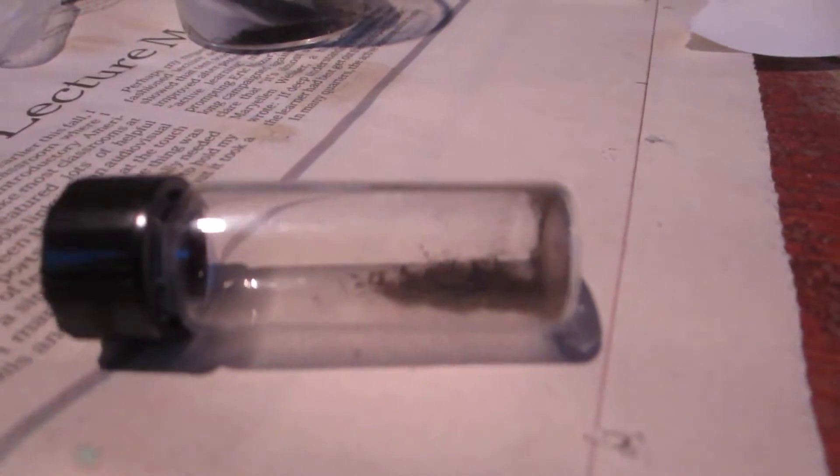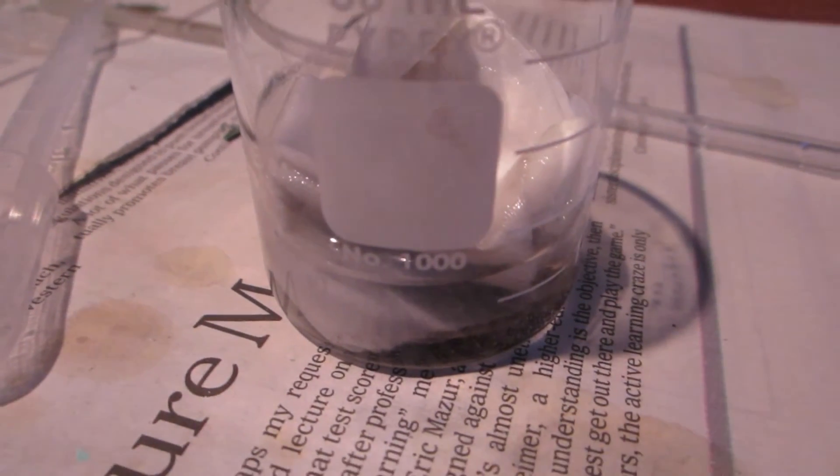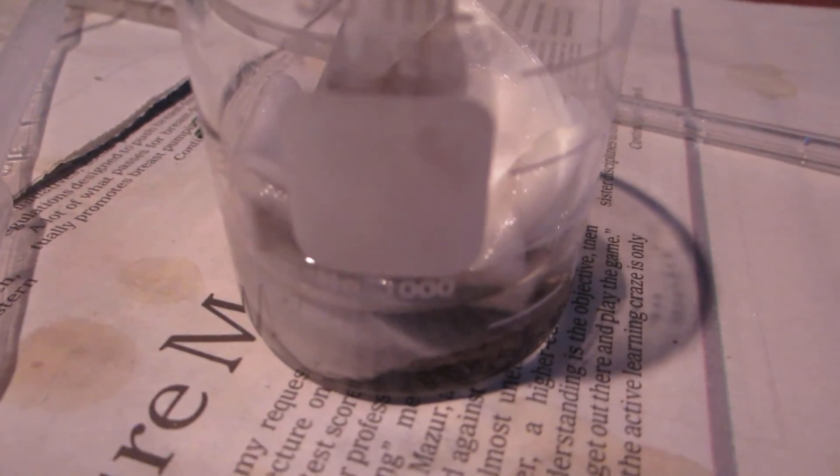This is the gold I recovered. A lot of it stuck to the filter paper, so I'm going to dissolve it again in a mixture of hydrochloric acid and hydrogen peroxide, then precipitate it out without filtering so it doesn't stick to the paper.